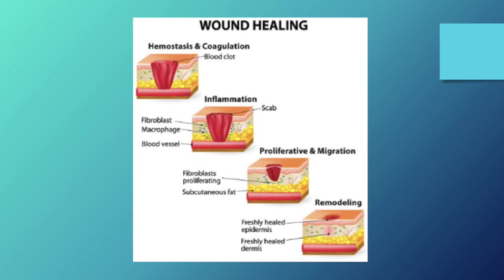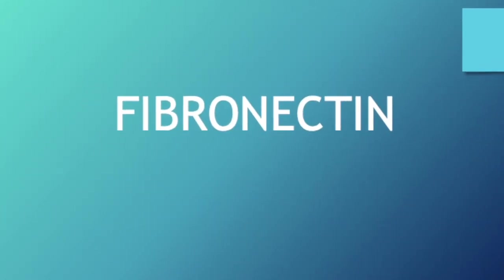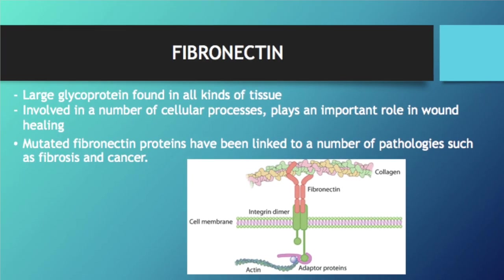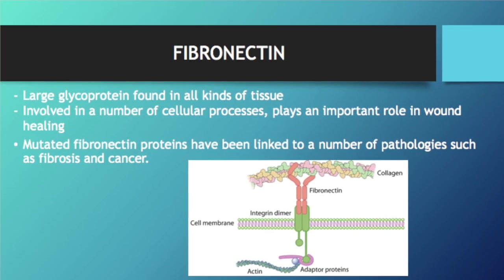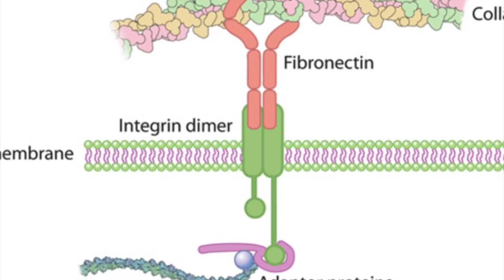One specific protein that plays a particularly large role in this process is an adhesive molecule known as Fibronectin. Fibronectin is a large glycoprotein located in the extracellular matrix. As seen in this photo, Fibronectin binds to membrane-spanning receptor proteins called integrins.